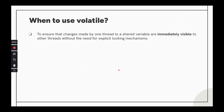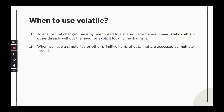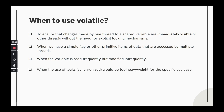Now let's see the scenarios under which volatile keyword can be used. Firstly, if you want to ensure that the changes made by one thread to a shared variable are immediately visible without the need of explicit locking or heavy synchronization. Also, if you have a simple flag or any primitive data being accessed by multiple threads. When the variable is being read frequently but modified infrequently — multiple threads want to see the reflected changes but they don't want to modify the variable — and when the value of a variable is not dependent on its previous value.